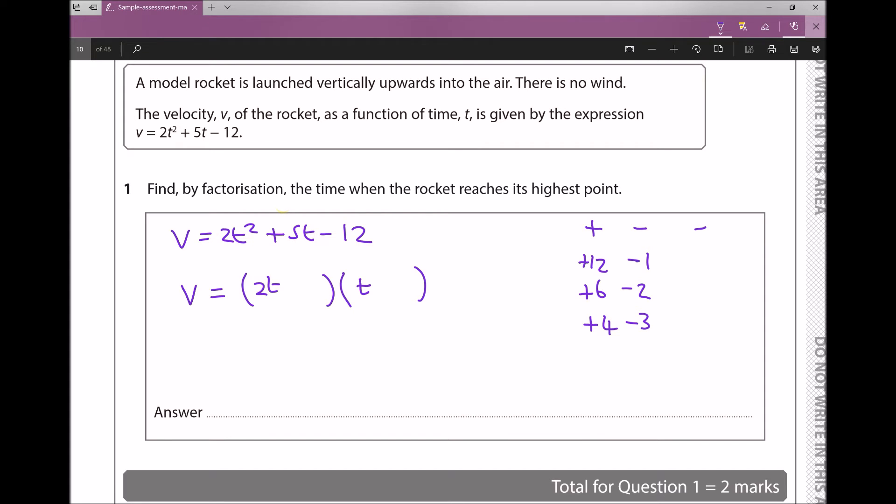Looking at the middle term, 5t, we need two numbers so that when one is multiplied by t and the other is multiplied by 2t, they add to give +5t. Hopefully you can see that of our solutions listed, this lends itself to +4 and -3.